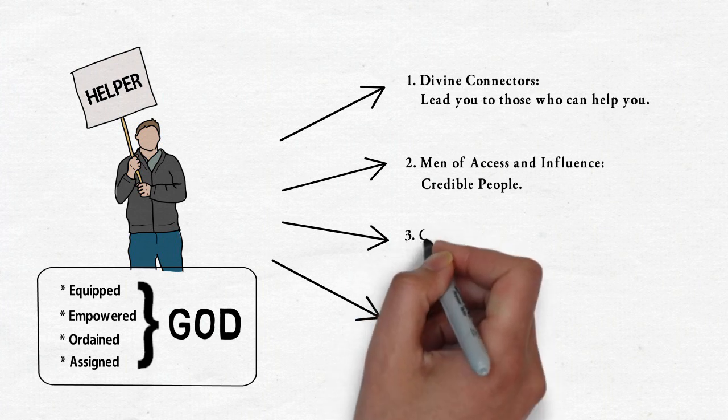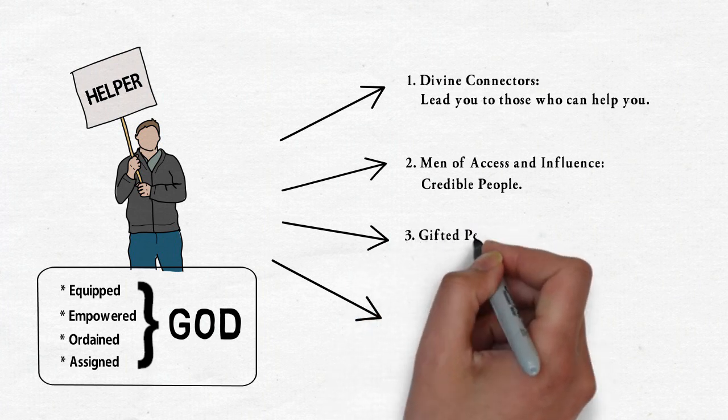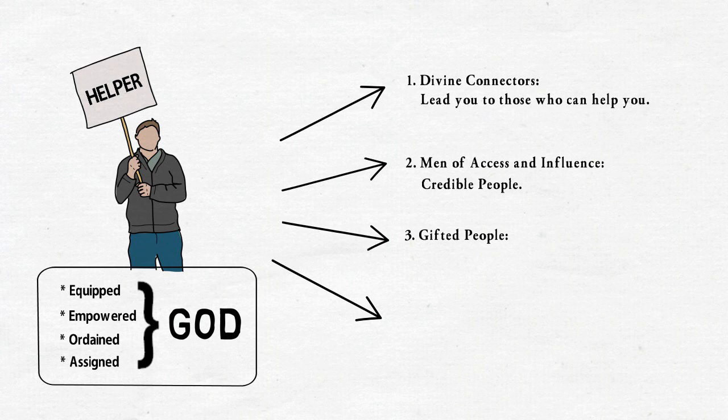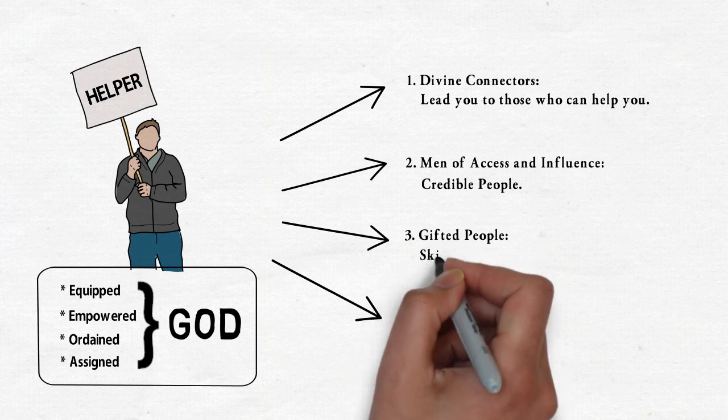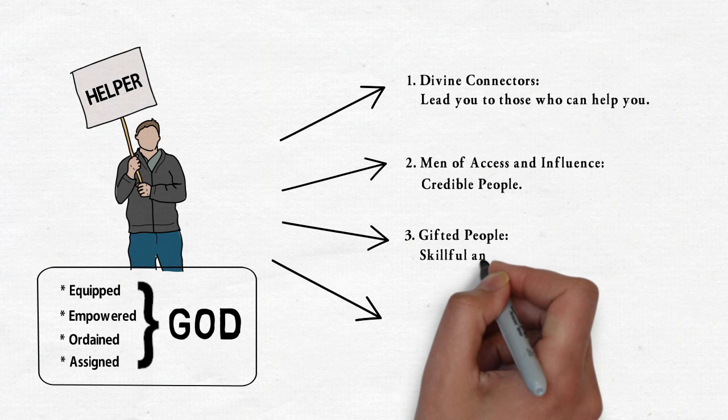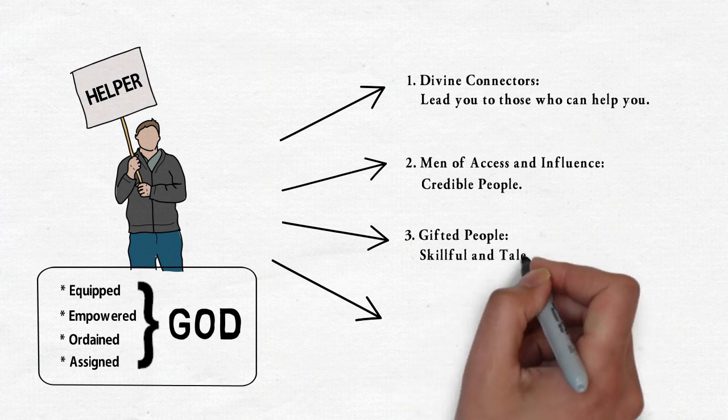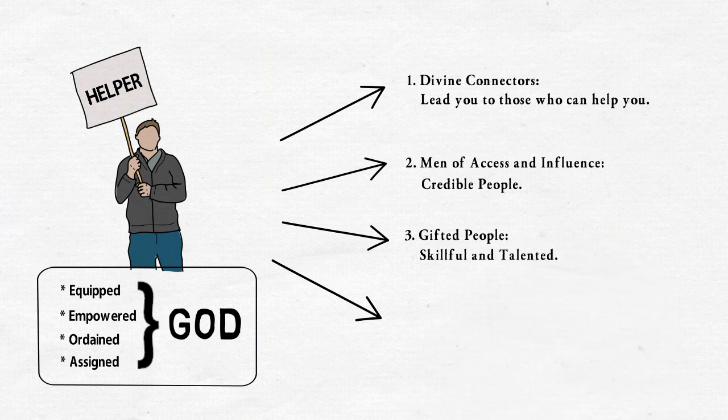The third kind of destiny helpers are called gifted people. Sometimes you just need skillful and talented people, men and women who will use their gifts, their talents, and their skill to help you accomplish God's purpose.